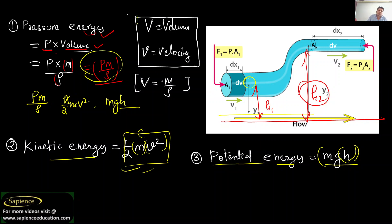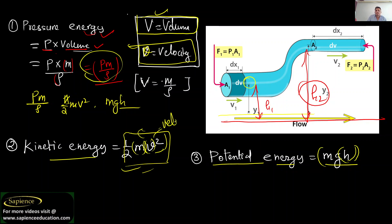Note that when I write capital V in the kinetic energy case, I am using small velocity v — so do not be confused. Small v is velocity; capital V is volume. Try to understand and differentiate these two clearly.